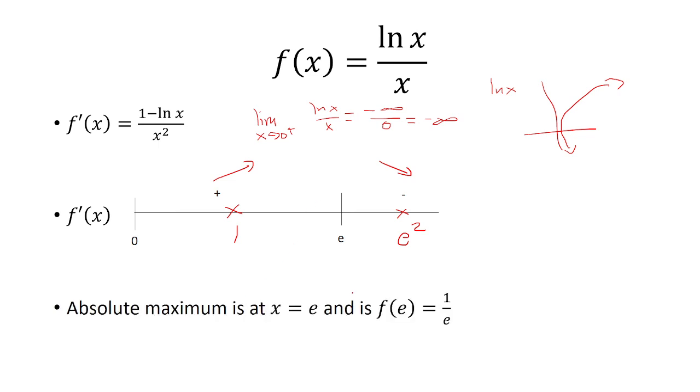And the question said, what is the absolute maximum? When you're looking for the absolute maximum, that is the y value, always. So we plug in x equals e into our original function, which was ln of x over x, and we get that 1 over e is the absolute maximum.